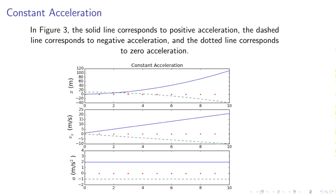For constant acceleration, in figure 3, the solid line corresponds to positive acceleration, the dashed line corresponds to negative acceleration, and the dotted line corresponds to zero acceleration. We see that the green line is decreasing, the velocity is decreasing, but for the blue line, the velocity is increasing.